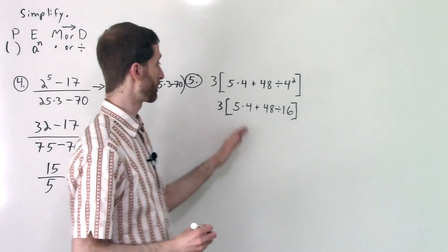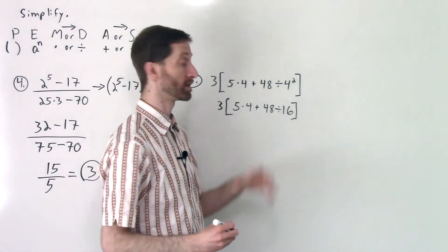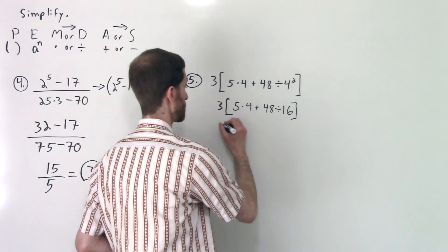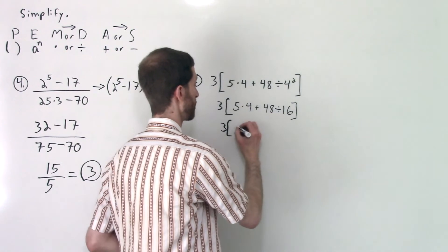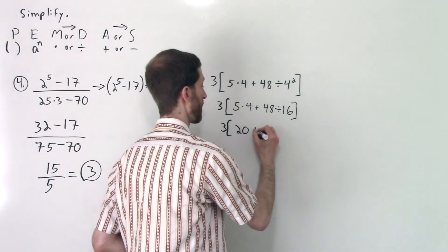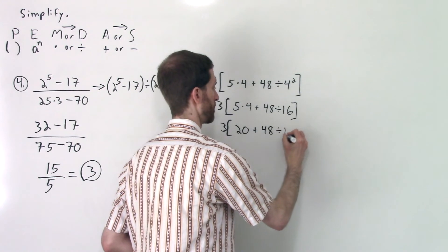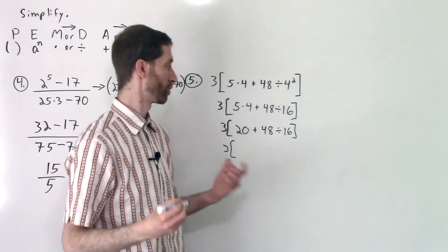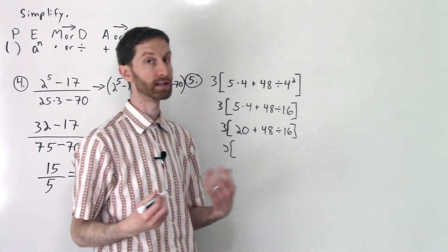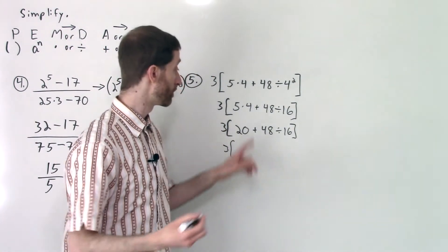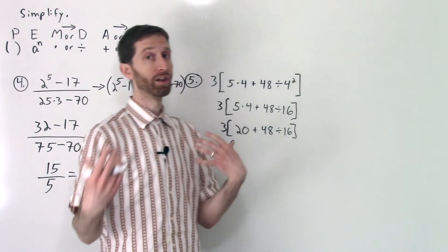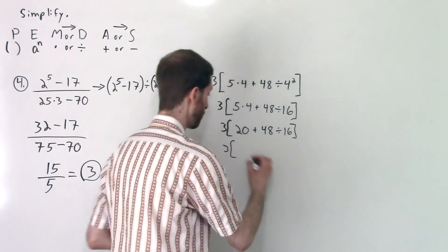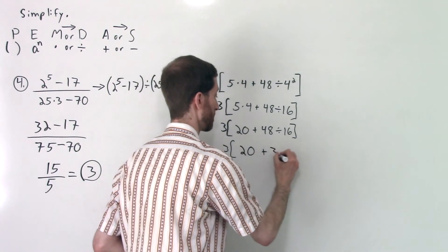And then I'm going to look at what I have remaining. I've got multiplication, followed by addition, and then division. Multiplication comes before division, so we'll do that part first. So I have 3 times, 5 × 4 is 20. Inside of these brackets, the grouping symbols, you have division followed by addition. So we'll do 48 ÷ 16, which is 3. So 20 + 3.